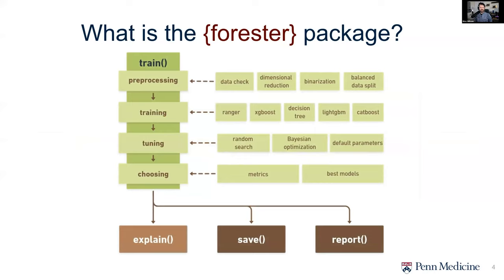This function gives you a data check, goes through preprocessing for you, and gives you enough of the initial data set to see if the models can be trained. It trains five tree-based models: decision trees, random forest, XGBoost, CatBoost, and LightGBM. You've got random search and Bayesian optimization. And at the end, it spits out a nice evaluated look at them all — a ranked list of how they performed and which one you should move forward with.